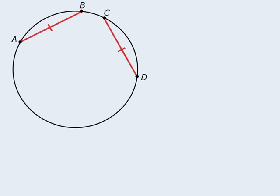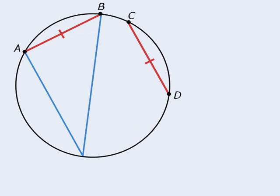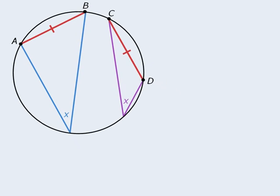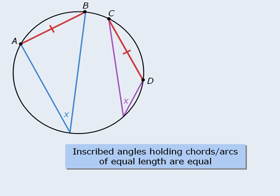The next property involves chords of equal length. If one inscribed angle holds one chord, and another inscribed angle holds this other chord, then both inscribed angles will be equal. The property can be summarized as follows: inscribed angles holding chords of equal length are equal.